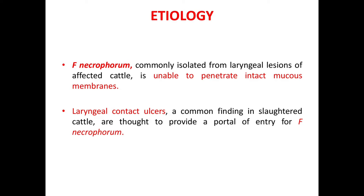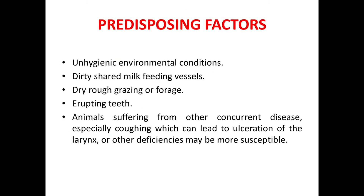The etiology, as already discussed, is Fusobacterium necrophorum, commonly isolated from laryngeal lesions of affected cattle. This bacteria is unable to penetrate intact mucous membranes. Laryngeal contact ulcers, a common finding in slaughtered cattle, are thought to provide a portal of entry for Fusobacterium necrophorum. Predisposing factors include unhygienic environmental conditions, dirty shared milk feeding vessels, dry rough grazing or forage, erupting teeth, and animals suffering from concurrent disease — especially coughing — which can lead to ulceration of the larynx.